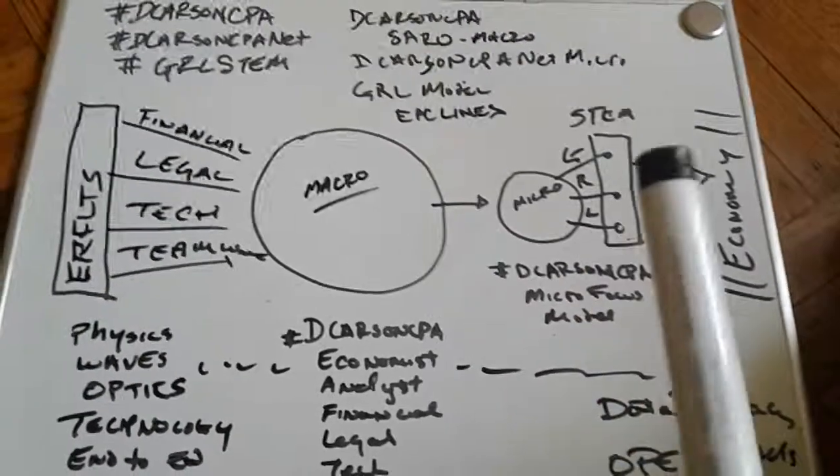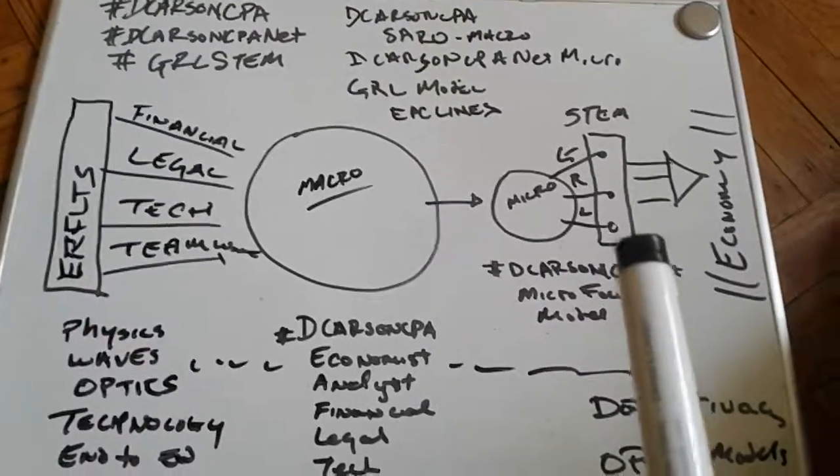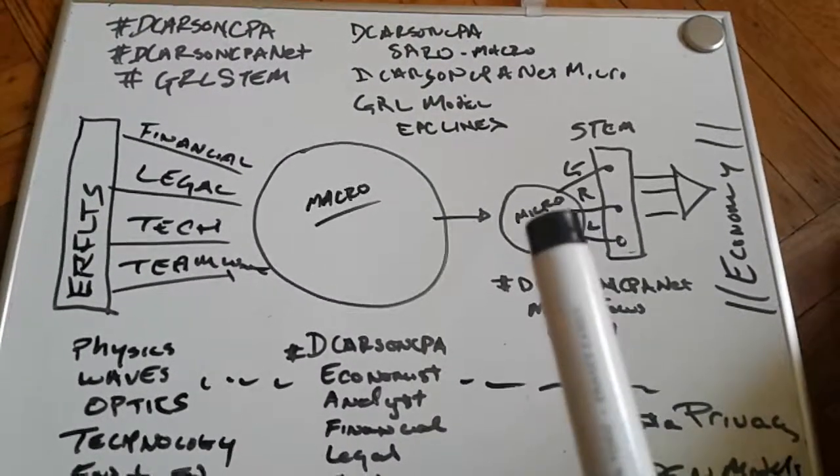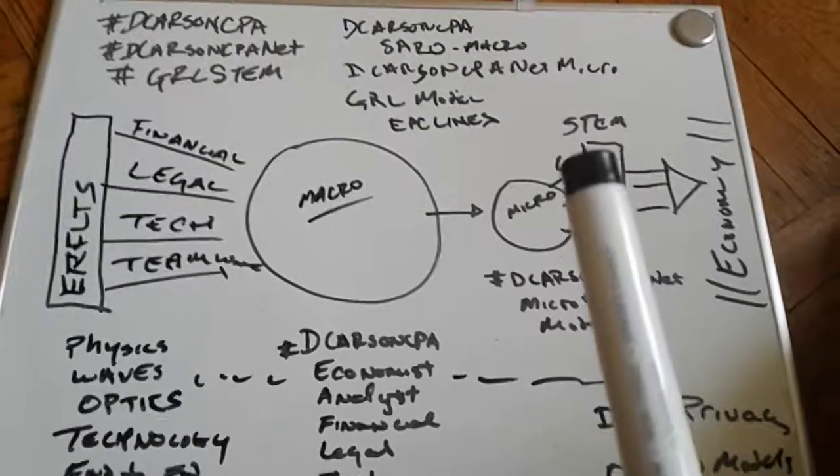Plugging into GRL STEM and distribution lines to the economy for services. Continually, we've got three directions we can spend. The directions are growth, risk, and logistics. The opportunity is to work with STEM.